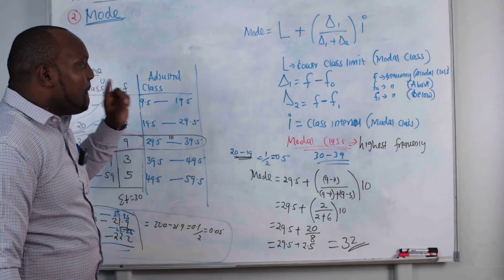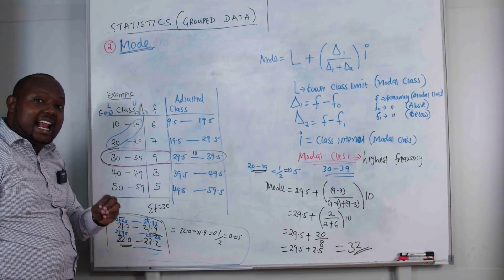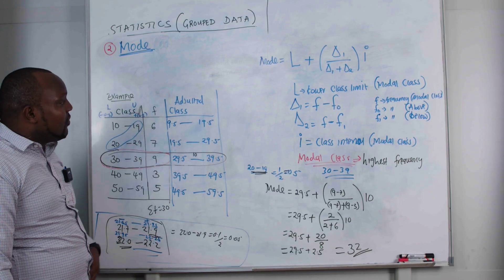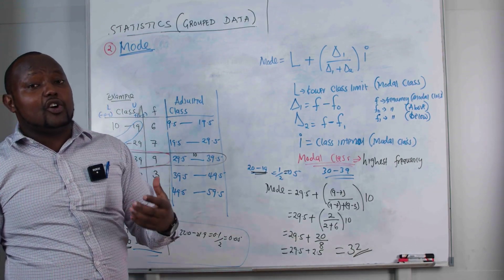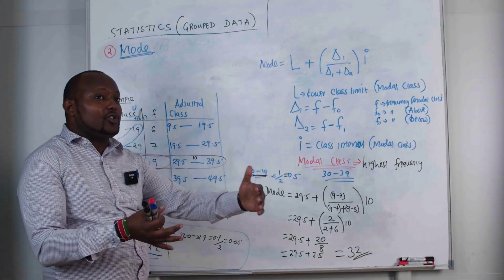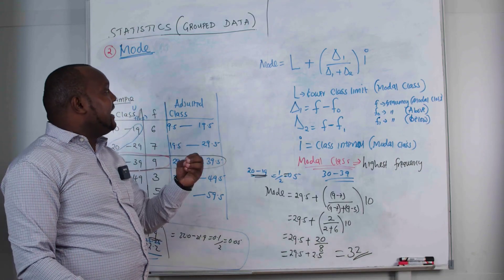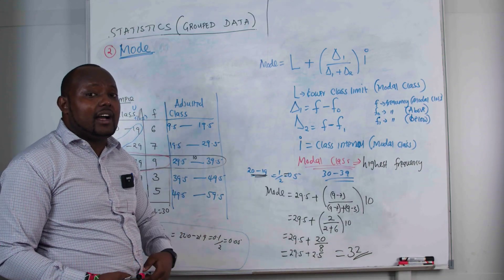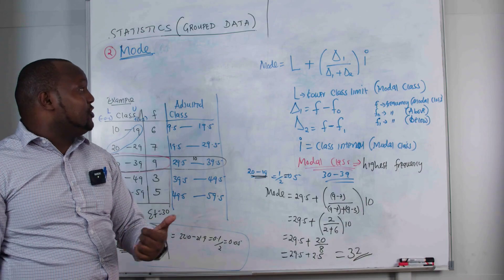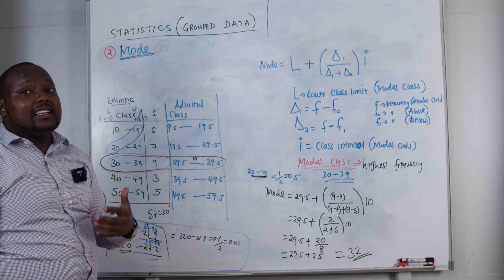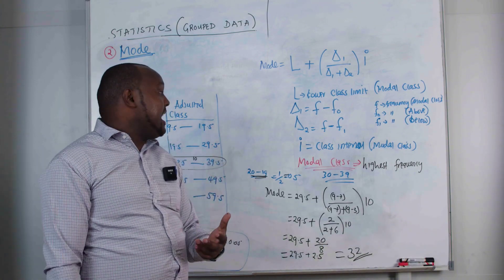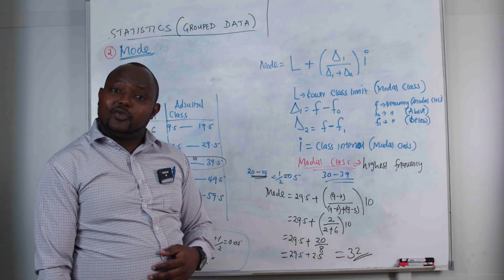That is how we get the mode of grouped data. The formula uses the lower class limit of the modal class — the class with the highest frequency. On our next video we will cover standard deviation and variance, and after that median, quartiles, and percentiles since those formulas are similar. Thank you for watching — here is where we simplify mathematics together.